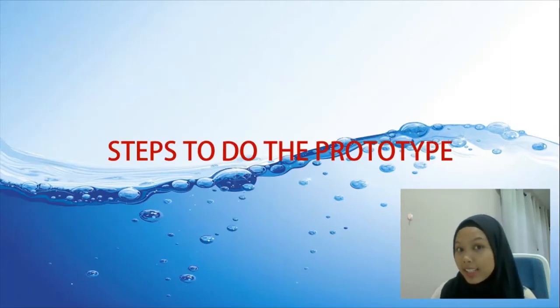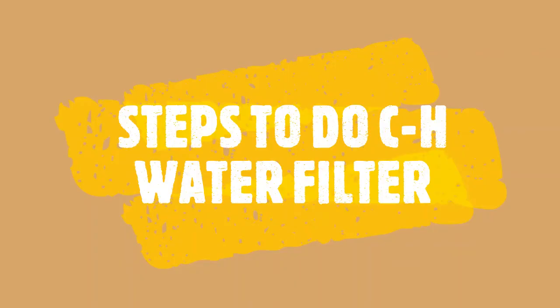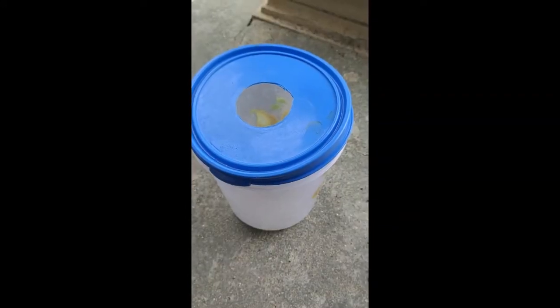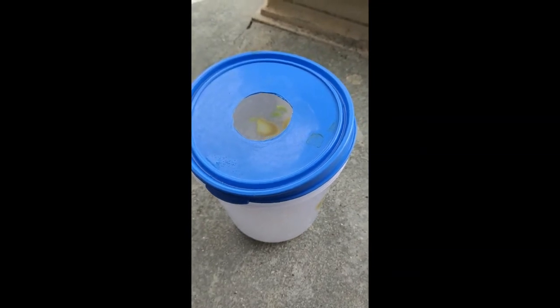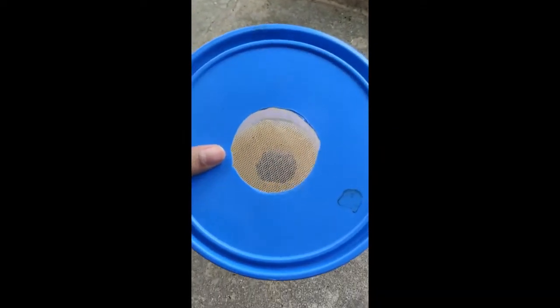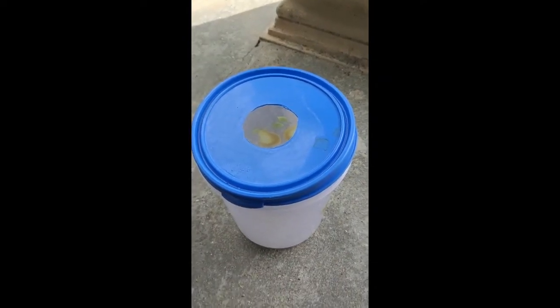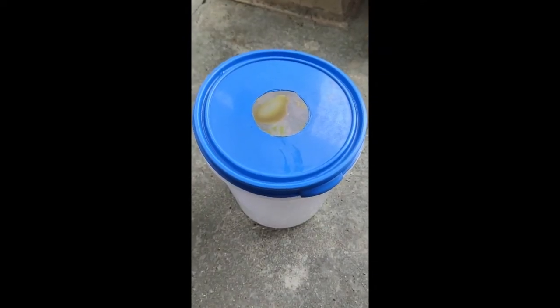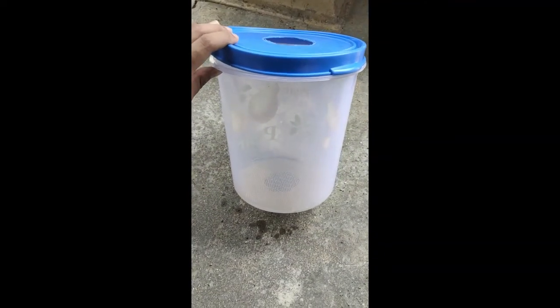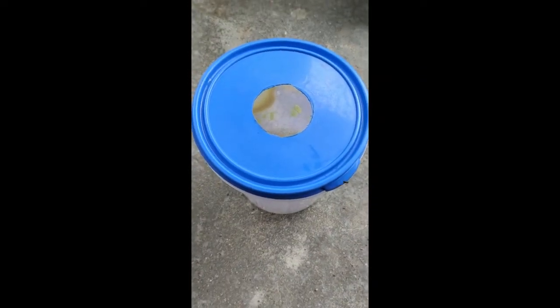So let's see the steps to build the prototype. First, find a container and make a hole on top and at the bottom so that water can flow in and flow out. The container can be any size, small or big, but the bigger the better. Make sure that the hole you make will fit the pipe at the household sink or the washing machine pipe.